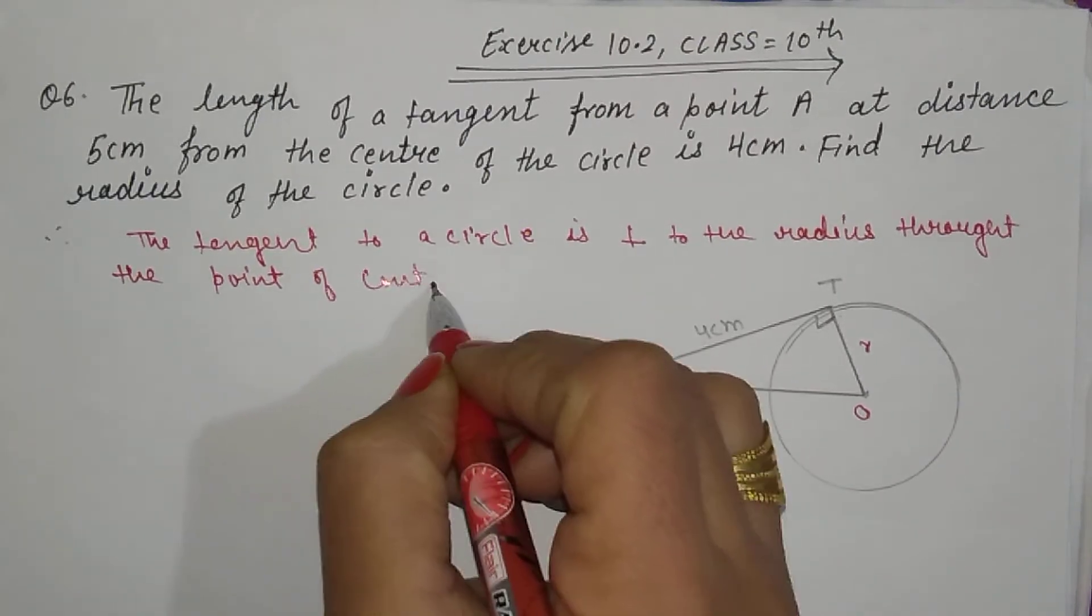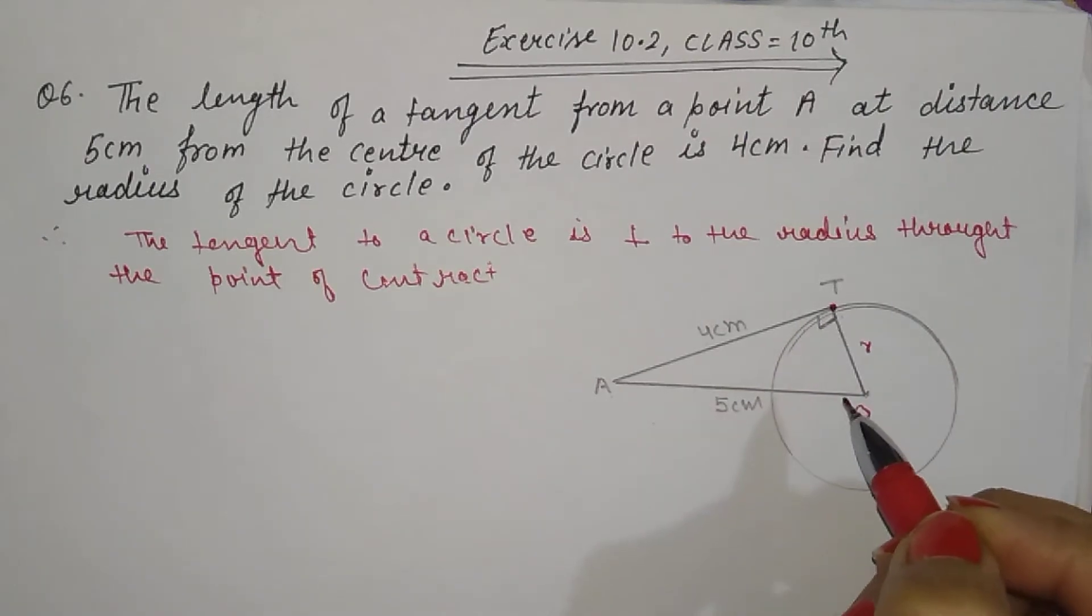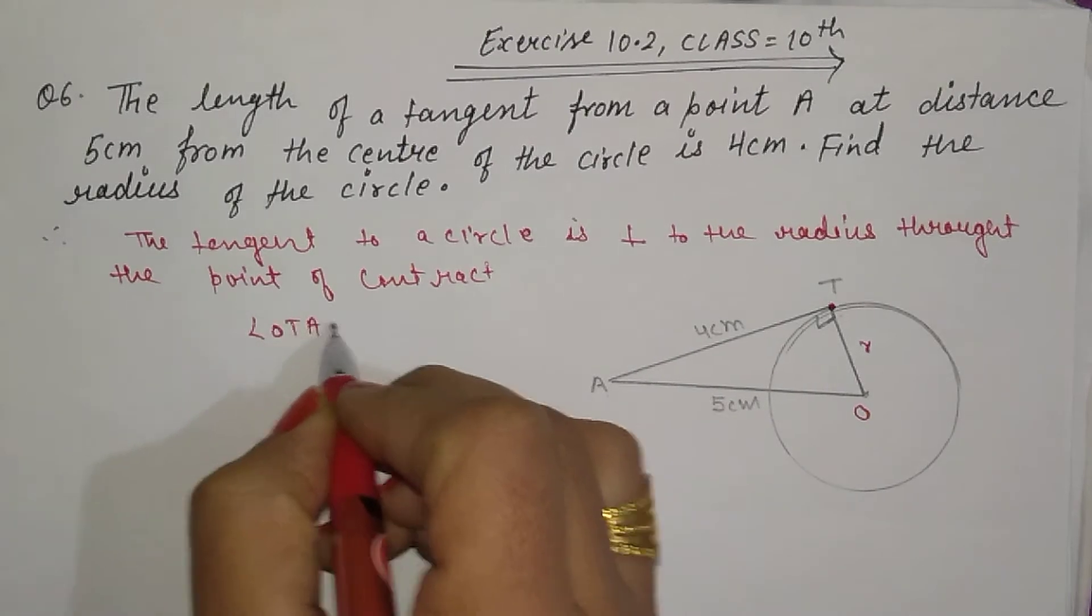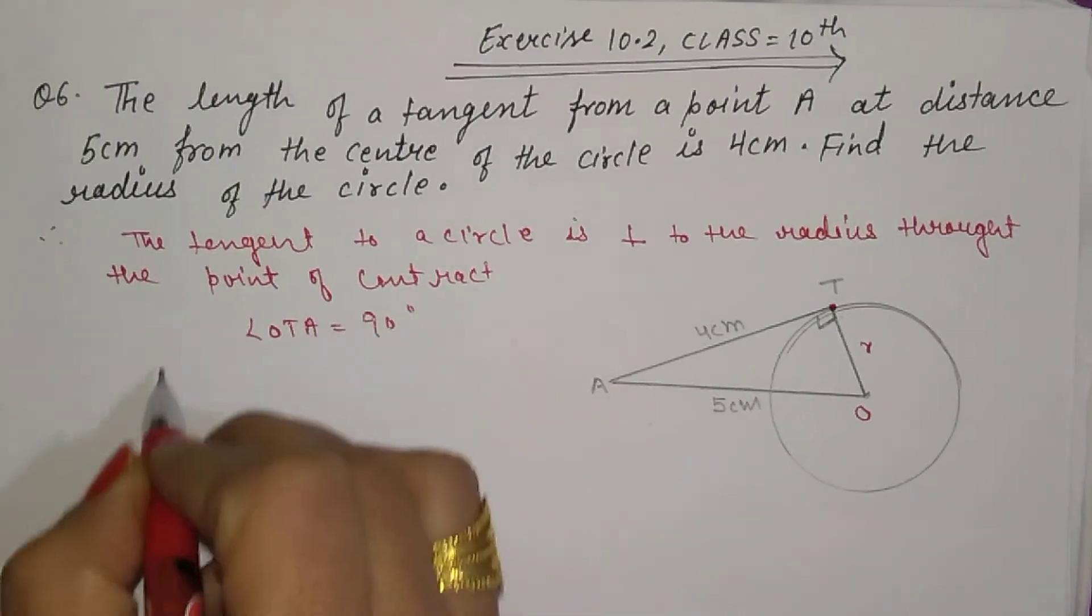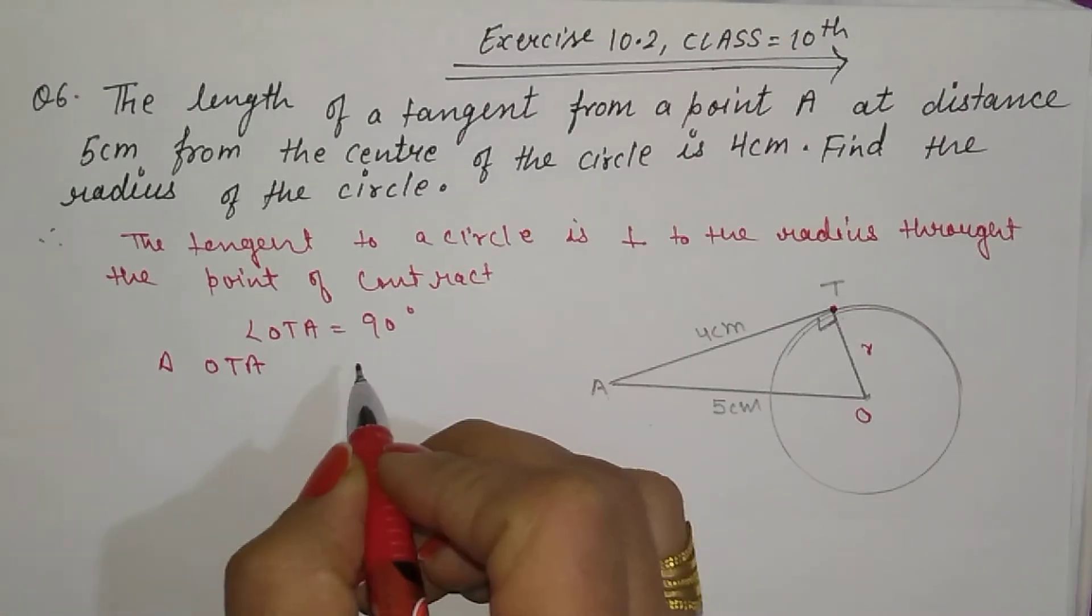And I have already told you many times about point of contact. This is point of contact. So angle OTA is equal to 90 degrees. That means triangle OTA is a right angle triangle.